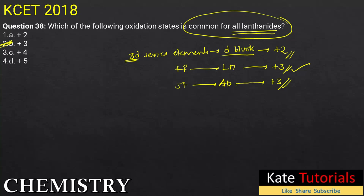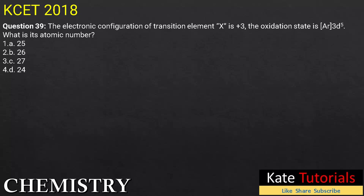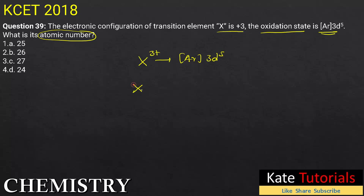The answer for question 38 is option 2, that is +3. Coming to question number 39, from d and f block elements: the electronic configuration of transition element X with +3 oxidation state is [Ar]3d⁵. What is the atomic number? Since the oxidation state is +3, that means I have removed two electrons from 4s and one electron from 3d. So initially the element's configuration would be [Ar]3d⁶4s².